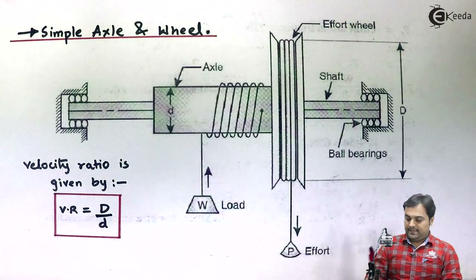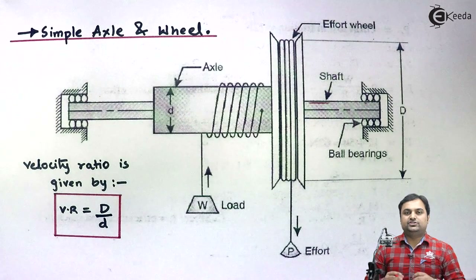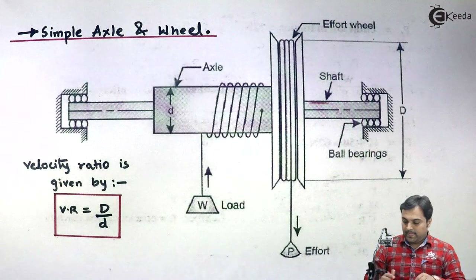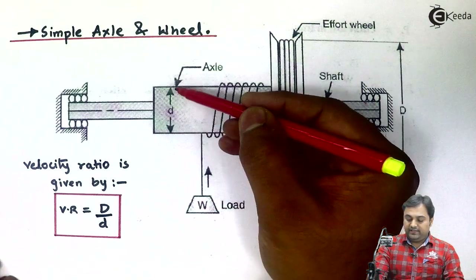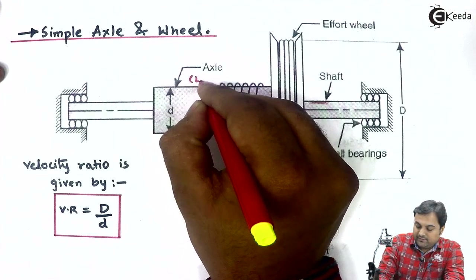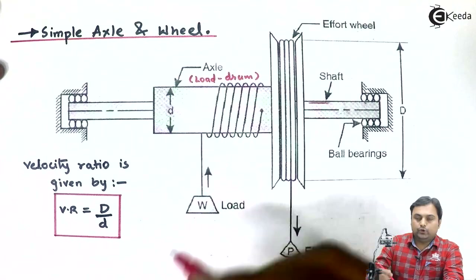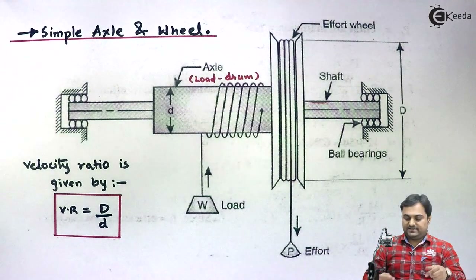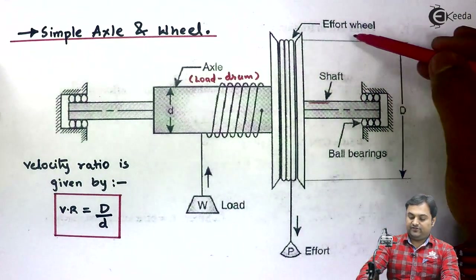Over the effort wheel, we have a rope or string to which effort is applied. The shaft is supported in bearings at both ends — bearings are the members that support the rotating shaft. Small d is the diameter of the axle, also called the load drum, and capital D is the diameter of the effort wheel.